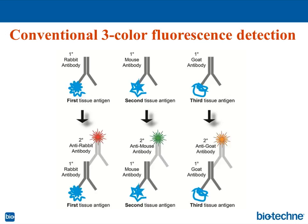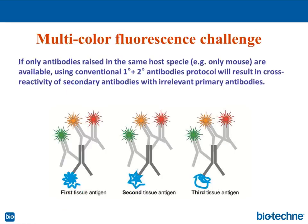But what is going to happen if we have primary antibodies raised in the same host species and we want to detect them using different colors? If we use primary rabbit antibodies and then anti-rabbit secondary antibodies conjugated to different fluorophores, all the secondary antibodies will cross-react with each primary antibody. In the end, we will see complete overlap in colors and will not be able to tell which color depicts which antigen — that's the major problem.